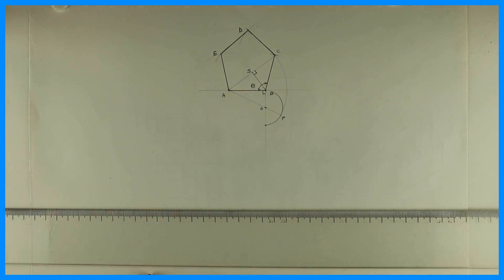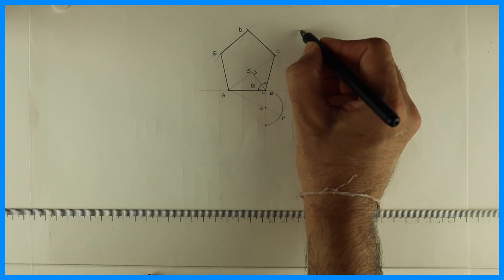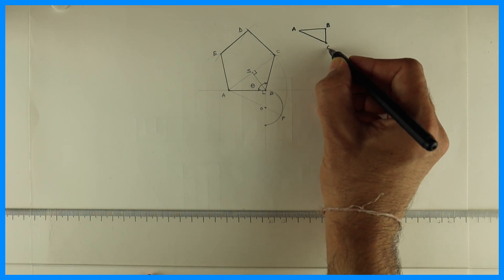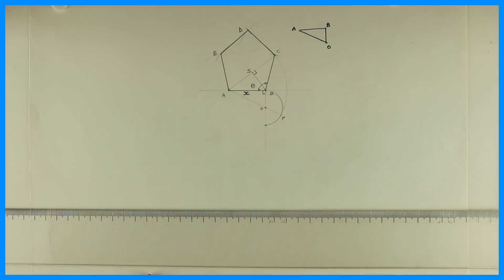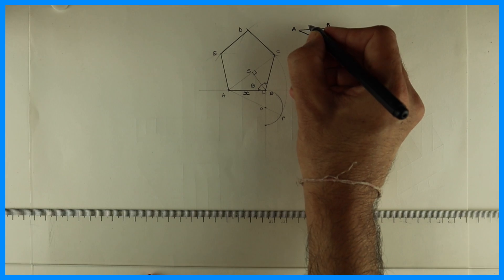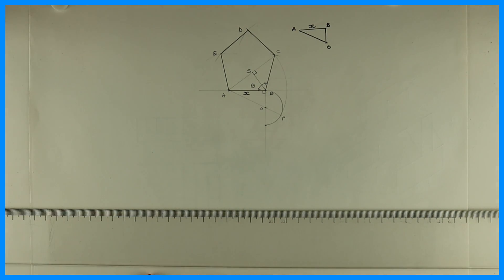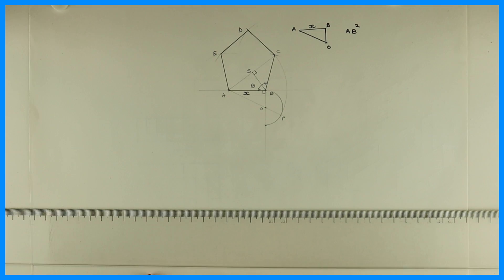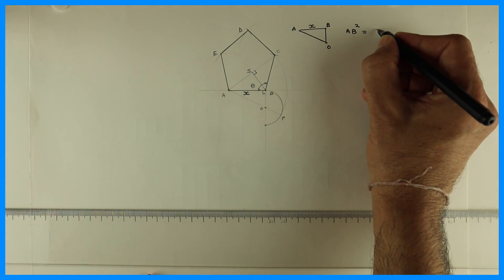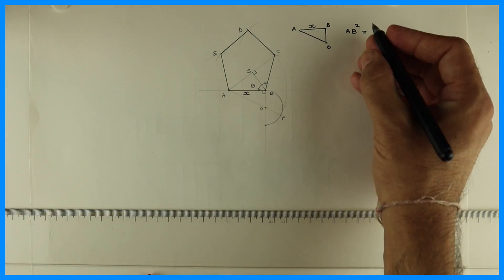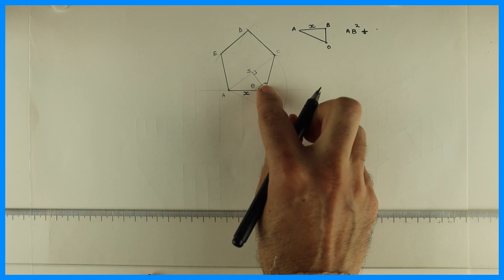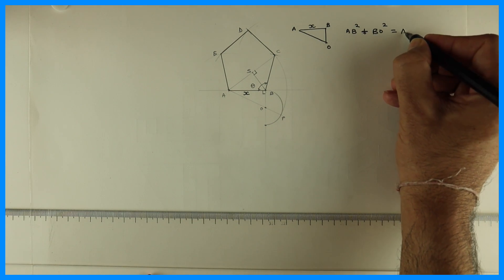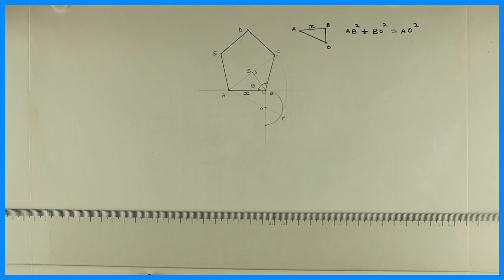Now see, this AO is hypotenuse. If you take angle ABO or triangle ABO. So this is X. Let's say AB is X. Then we have 90 degrees. So we can write AB square plus BO square. I'm applying Pythagoras equals to AO square. Right. AB square plus BO square is equal to AO square.